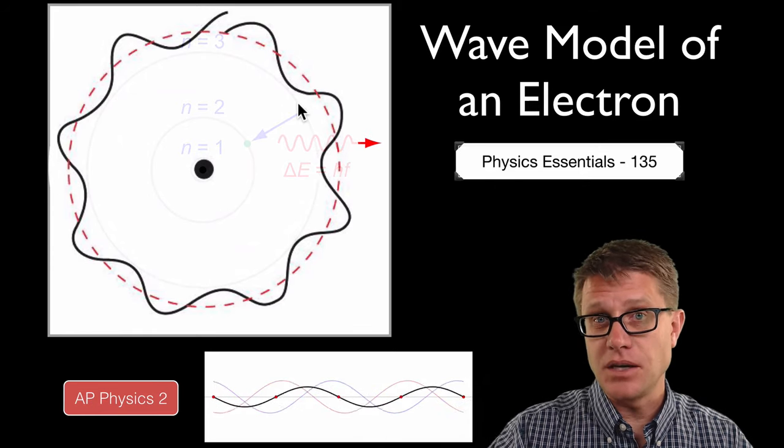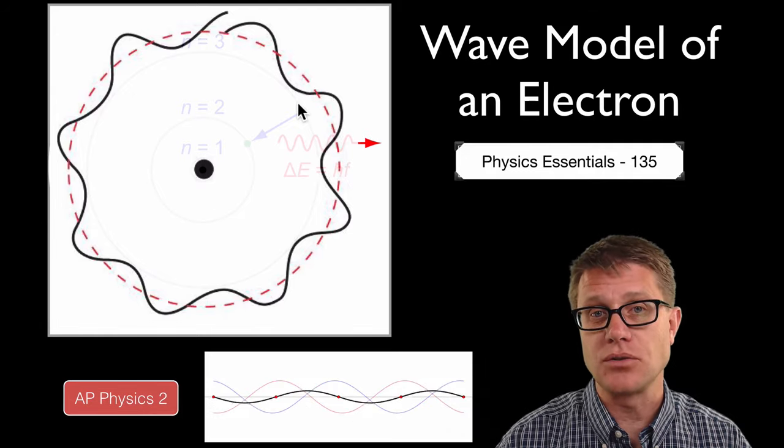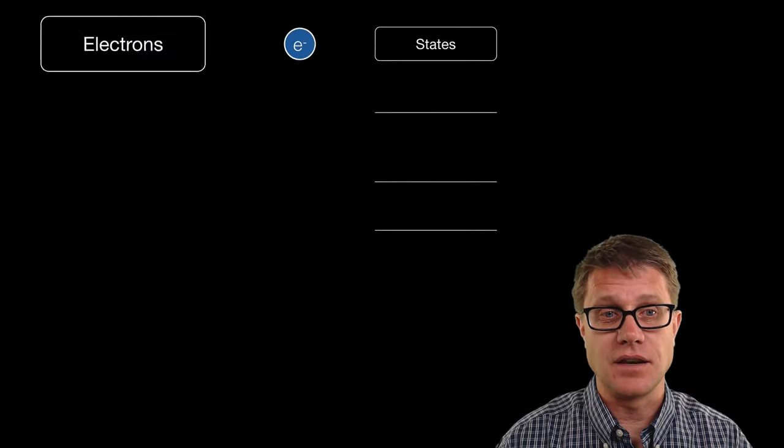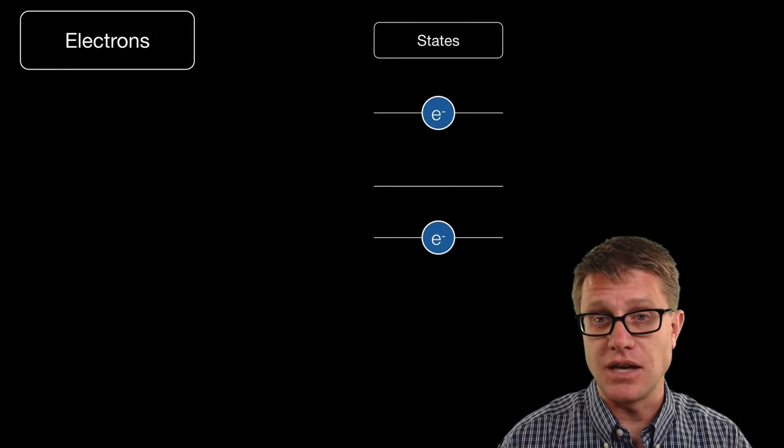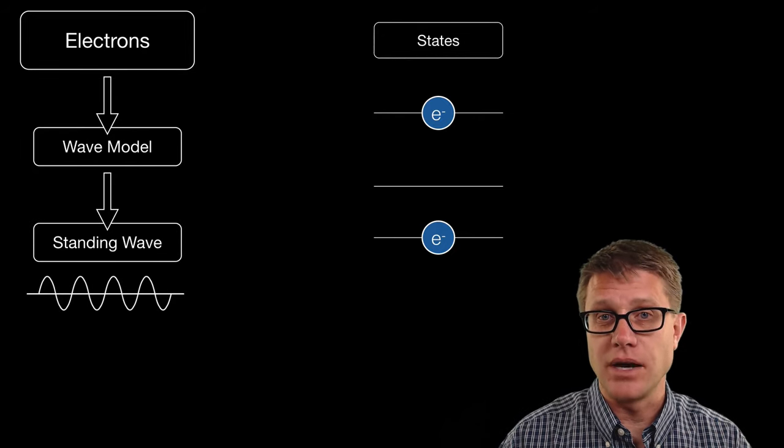And so they have to be a whole integer of the wavelength, the de Broglie wavelength for the electron to exist. If it does not match up perfectly then the electron annihilates itself. And so electrons can only exist in certain energy states. And so the wave model allows us to understand this at the level of standing waves.